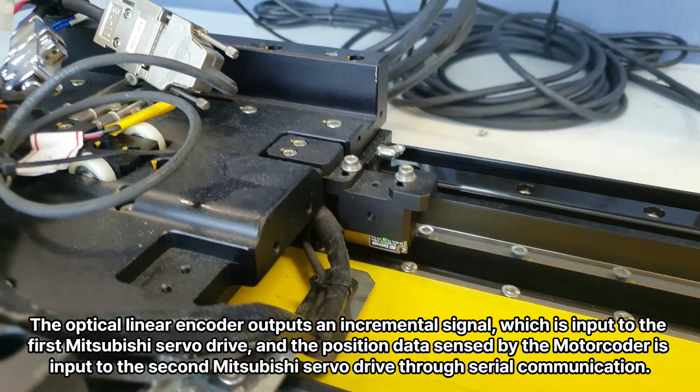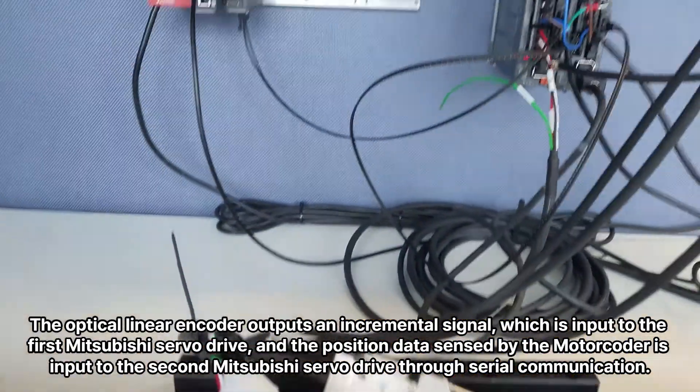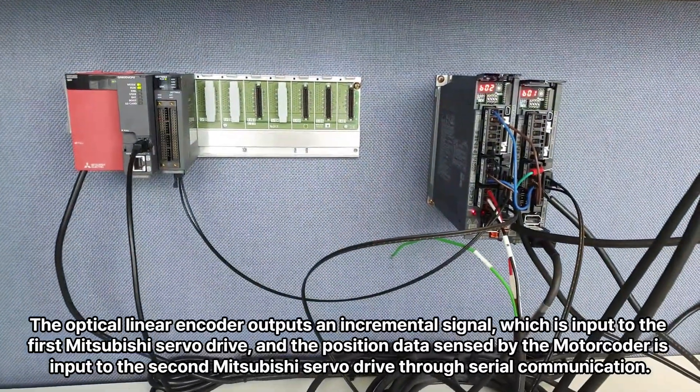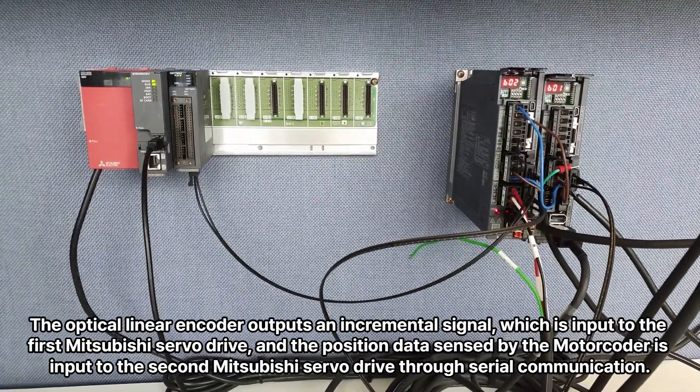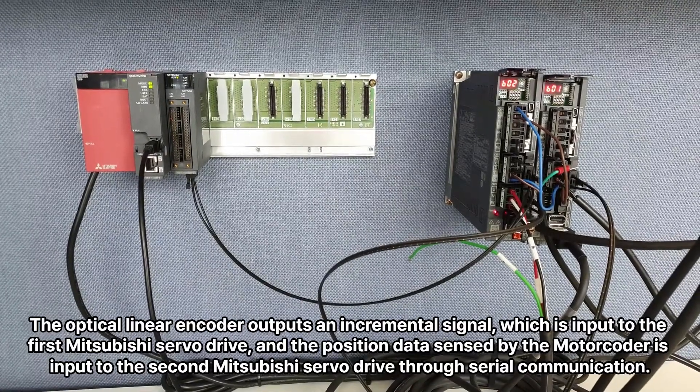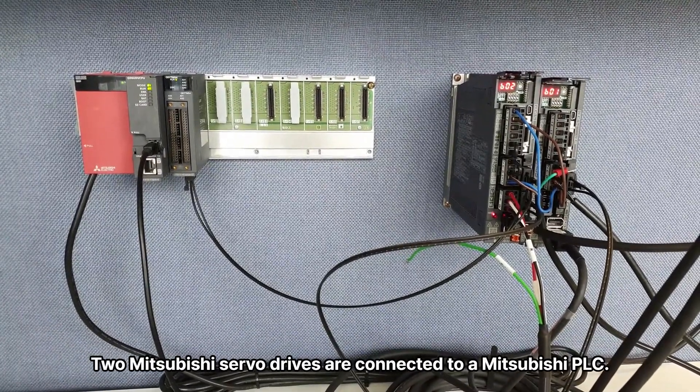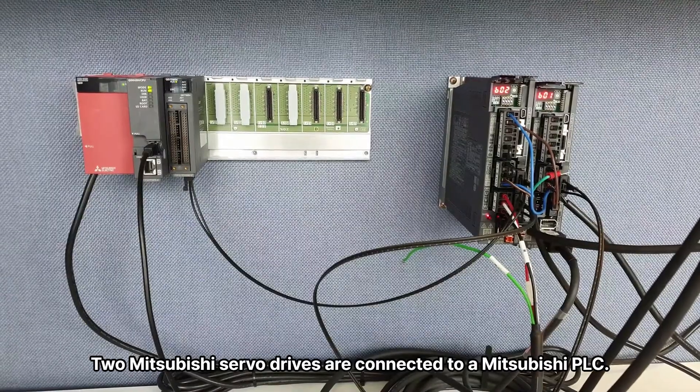The optical linear encoder outputs an incremental signal, which is input to the first Mitsubishi servo drive, and the position data sensed by the motor coder is input to the second Mitsubishi servo drive through serial communication. Two Mitsubishi servo drives are connected to a Mitsubishi PLC.